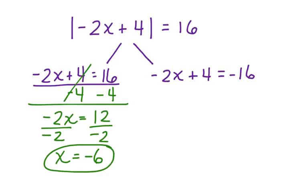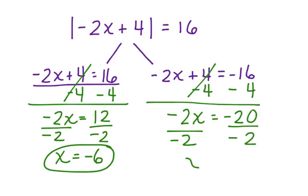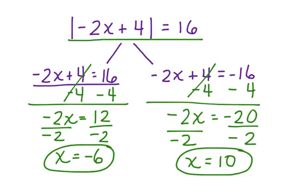Now let's work on the other equation. We subtract 4 from both sides — cancels — bringing down negative 2x equals negative 16 plus negative 4, which is negative 20. Divide both sides by negative 2, and x is equal to positive 10. This is the other possible solution for this absolute value equation. Our work is now complete.